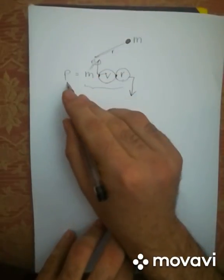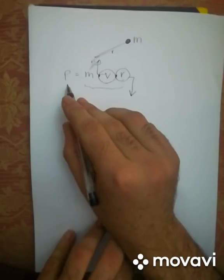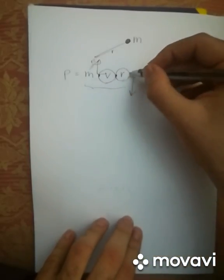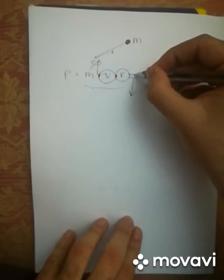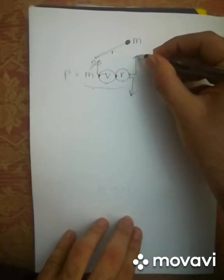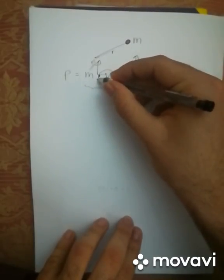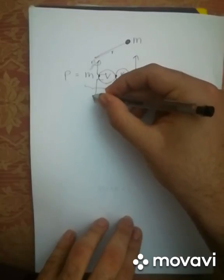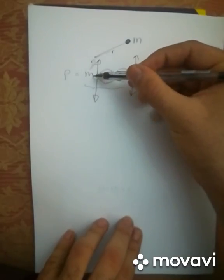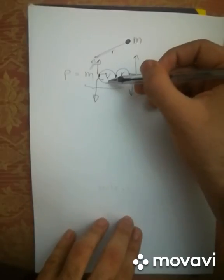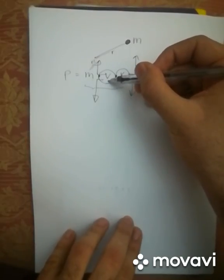The same is true if we reverse. If the radius increases, the velocity of the object will decrease. And we mustn't forget the mass. If the mass increases, the velocity will immediately decrease.